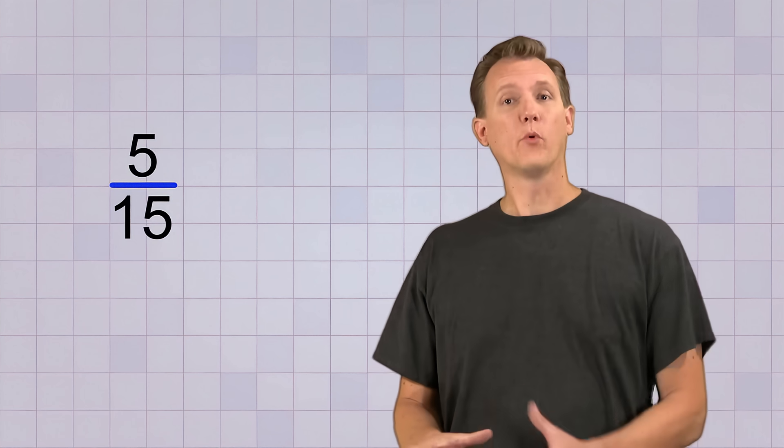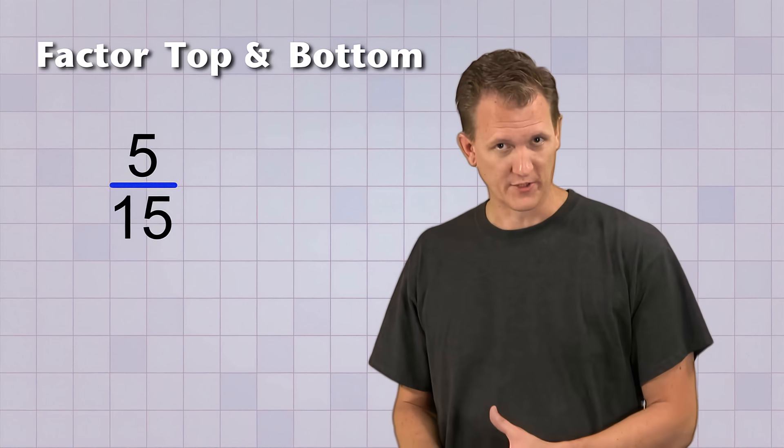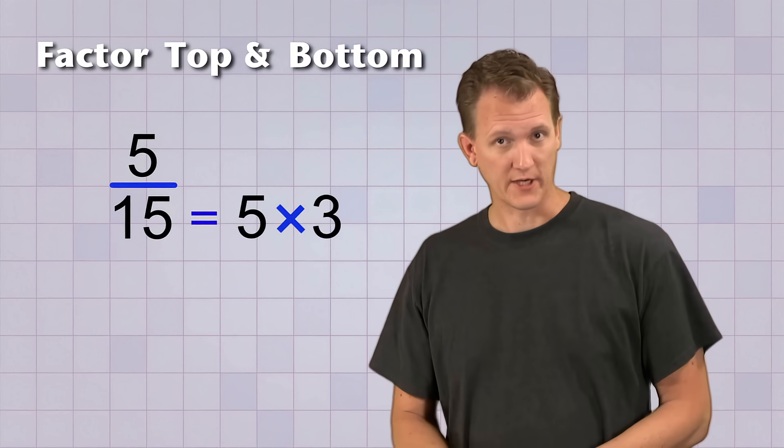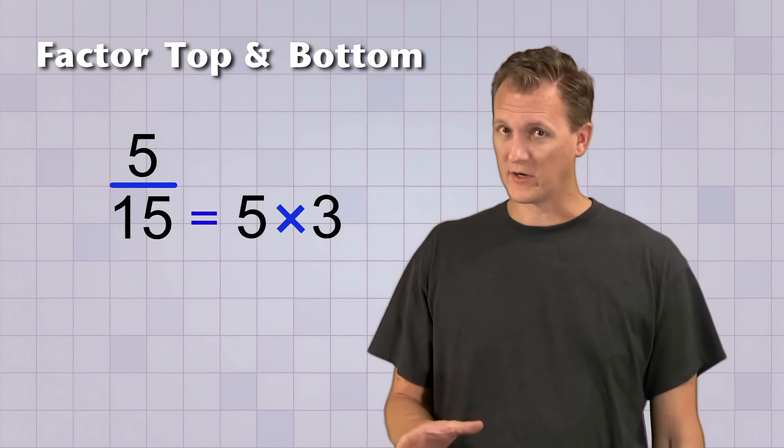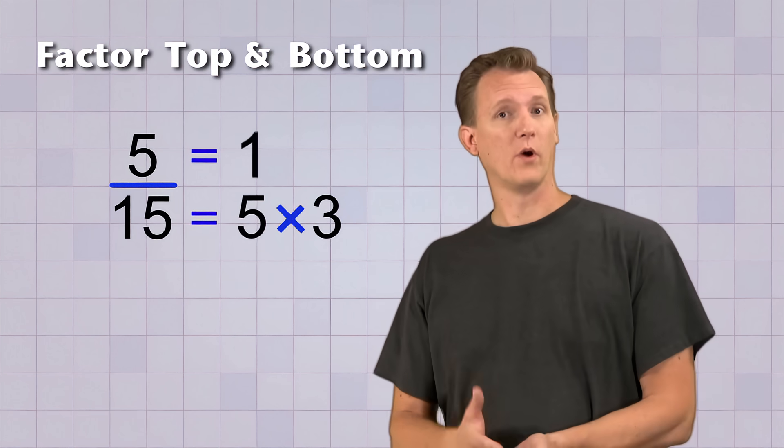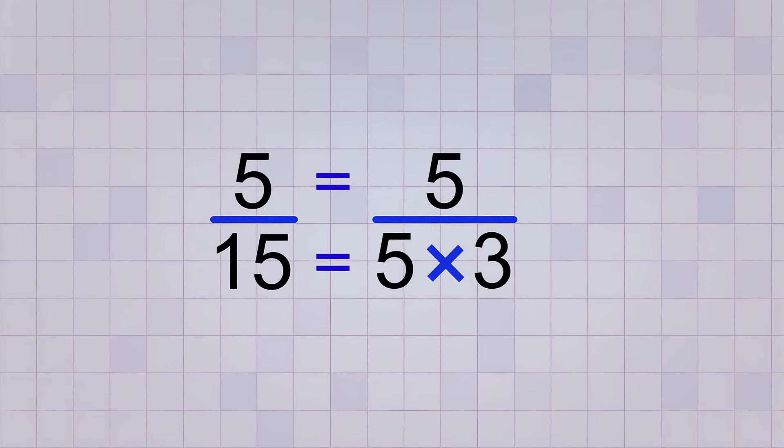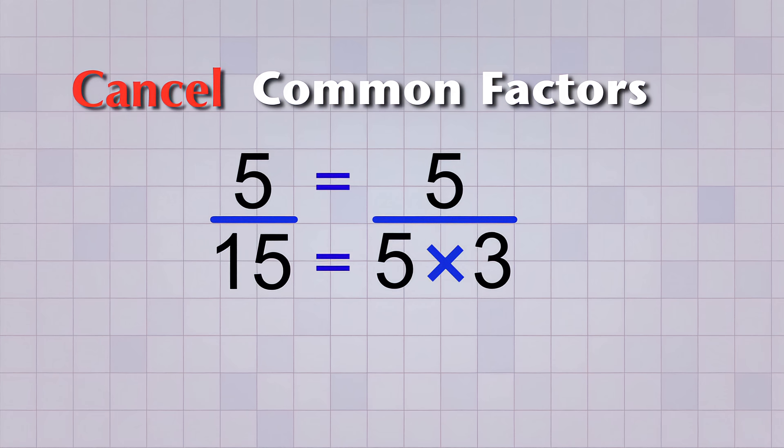Let's start with an easy one. Let's simplify the fraction 5 over 15. Step one is to factor the top and bottom numbers. So, we know that 15 factors into 5 times 3. And 5 is a prime number. That means its only factors are 1 and itself. But 1 is always a factor, so we don't need to write that down. Step two is to look for common factors and cancel them. And we can see that there's a 5 on the top and there's a 5 on the bottom.